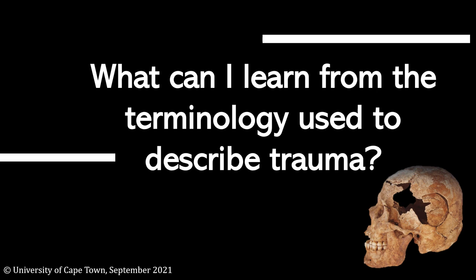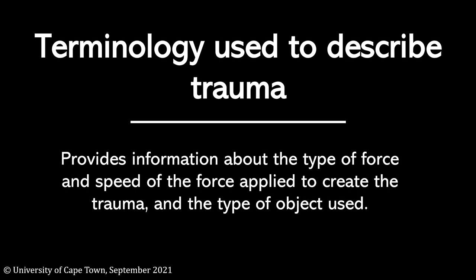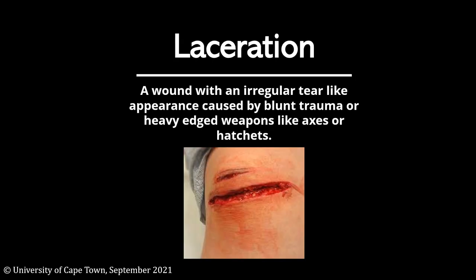What can I learn from the terminology used to describe trauma? The terminology used to describe trauma provides information about the type of force and the speed of the force applied to create the trauma. It also provides information about the type of object used. Let's look at some examples of different wounds and what their causes may be based on their names.